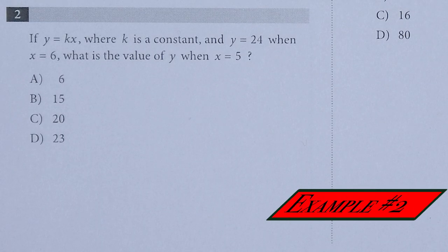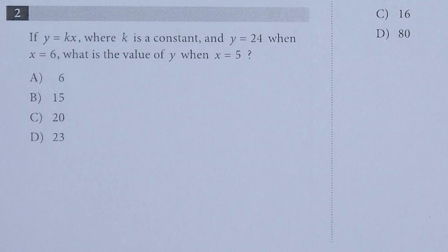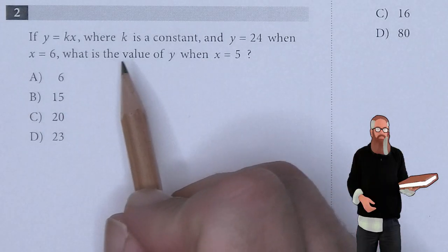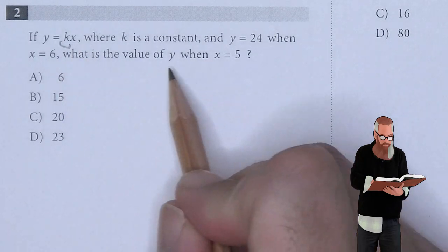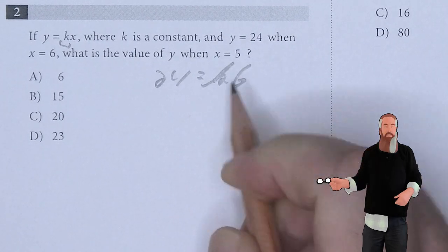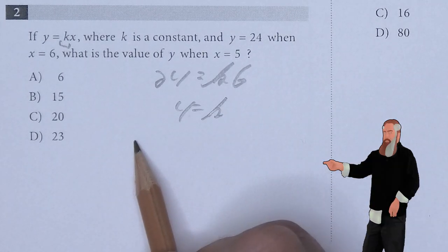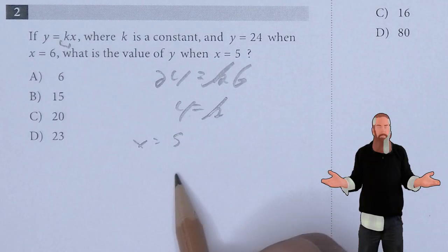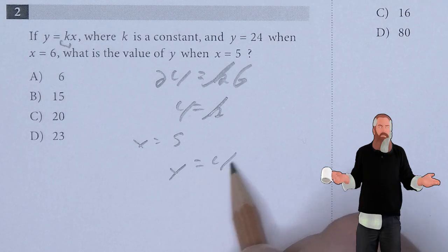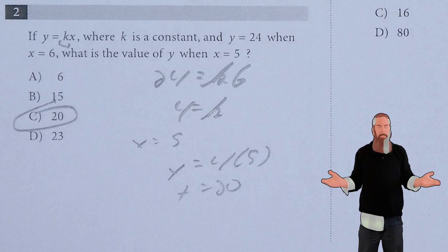If y is equal to Kx, where K is constant and y is 24 when x is 6, what is the value of y when x is 5? Let's figure out what K is first. 24 is equal to K times 6, which means that K is 4. So when x is equal to 5, y is equal to 4 times 5, which is 20, and C is the answer.